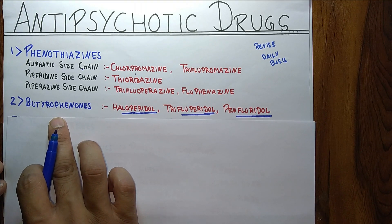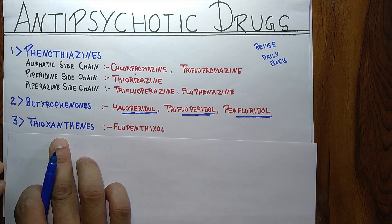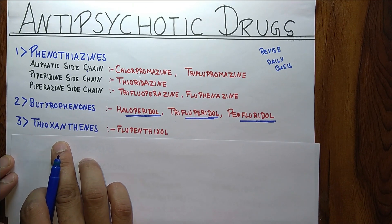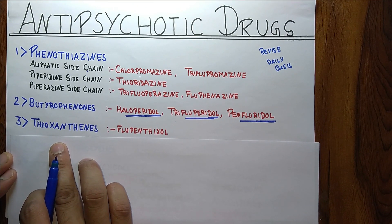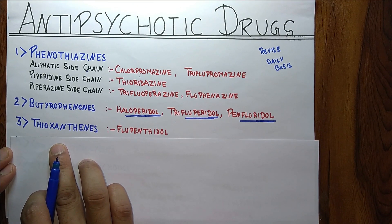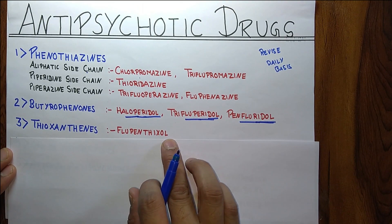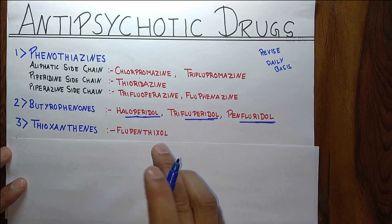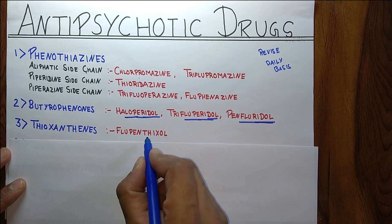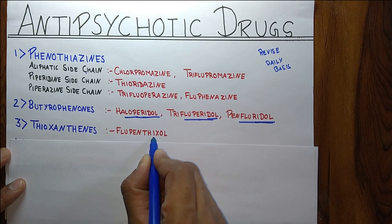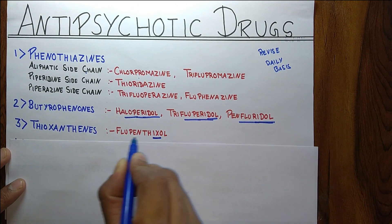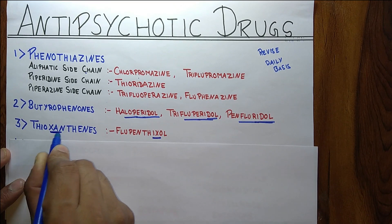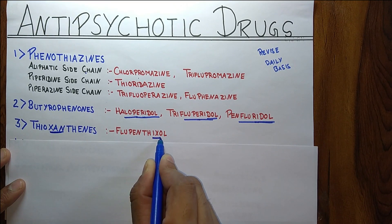Next one is Thioxanthines. Thioxanthines has only one drug, that is Flupenthixol. So Thioxanthine means Flupenthixol — it is Xanthine-Azole.